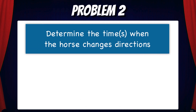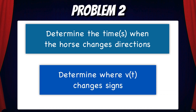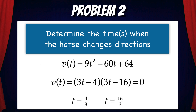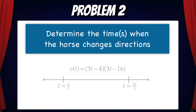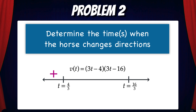Problem 2: Determine the times when the horse changes directions. We need to determine where the velocity changes signs. In Problem 1 we found that velocity is 0 at t = 4/3 and t = 16/3. Let's put these two values on a number line and analyze the signs of the velocity. First let's test a number to the left of 4/3 — here I'll test 1. Plugging 1 into v(t), the first factor is negative and the second factor is negative, so the velocity is positive to the left of t = 4/3.